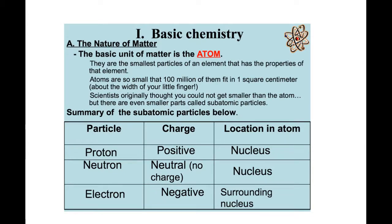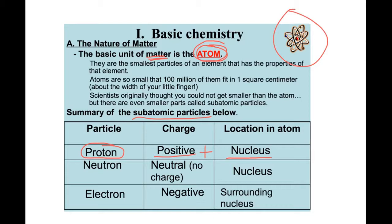The basic unit of all matter — things that have mass and occupy space, like you — is something called an atom. Hopefully you've heard that before in middle school. Atoms are made of three different types of subatomic particles. The first is called a proton. Protons have a positive charge, and those are located within the nucleus. So in this atom diagram, the nucleus is that little red ball in the middle — that's where the protons are going to be found.